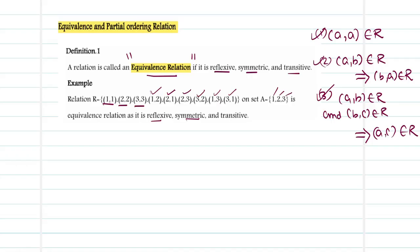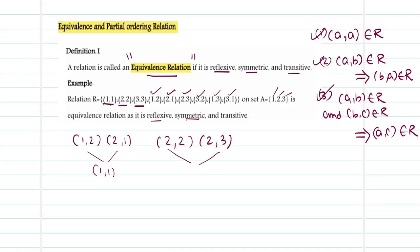The next check is transitivity. Whenever I take (1,2) and (2,1), their end elements (1,1) are also inside. Whenever I take (2,2) and (2,3), their end elements (2,3) are also inside. Whenever I take (3,2) and (2,1), (3,1) is also inside. So whenever I check for the triad (A,B) and (B,C), (A,C) is also inside. So the relation is called a transitive relation.